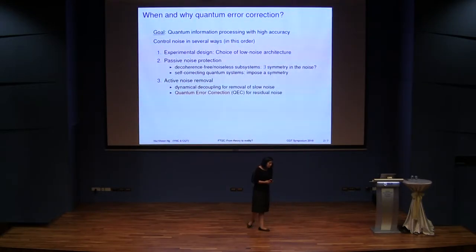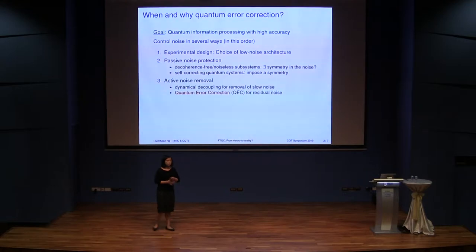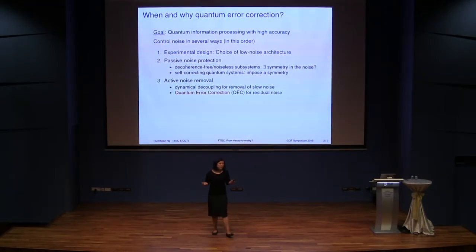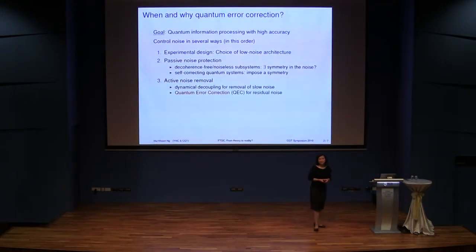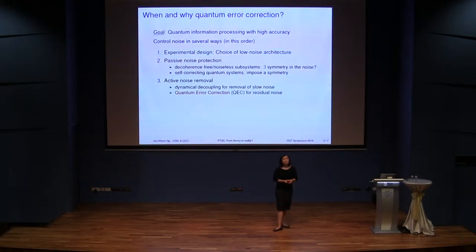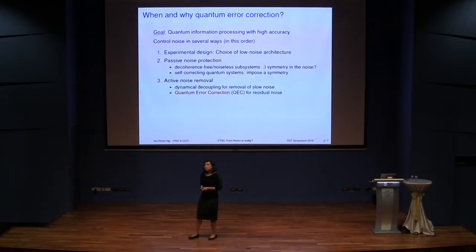The goal here — I'm not thinking about one-qubit or two-qubit devices, I'm really thinking long term, going to large scale, wanting to build a useful quantum computer. You're going to use it to compute something for a question you care about. The computation should give you an answer that is accurate, something you can check, something that gives you the right answer more or less. So what you want is to do quantum information processing with high accuracy.